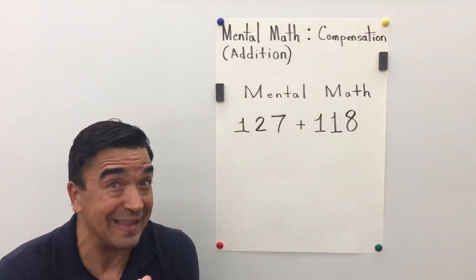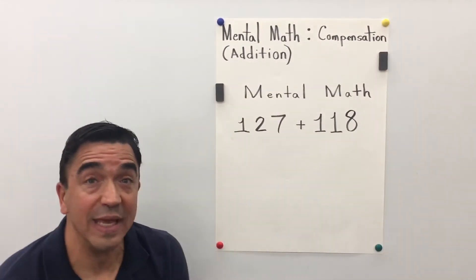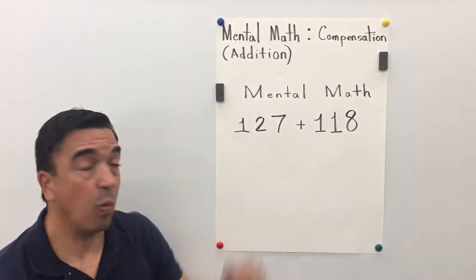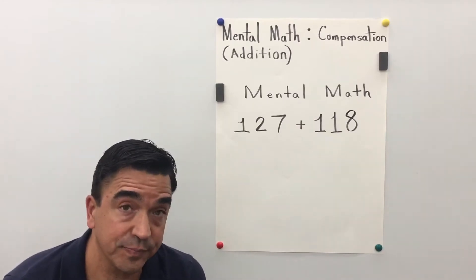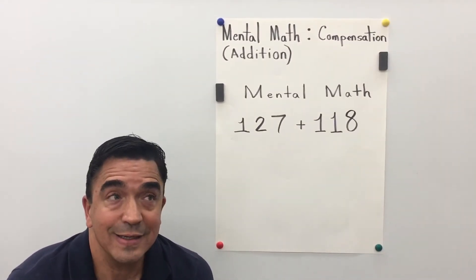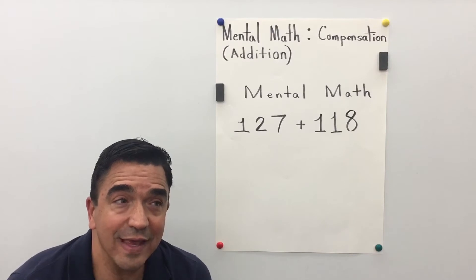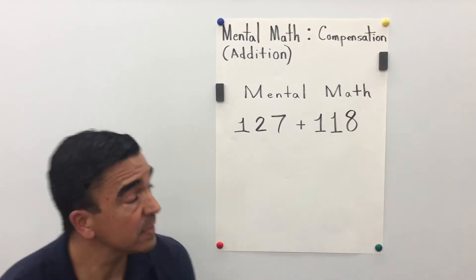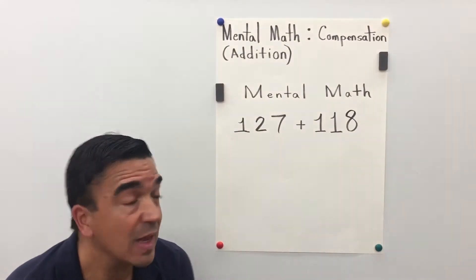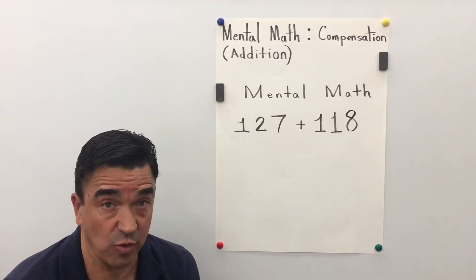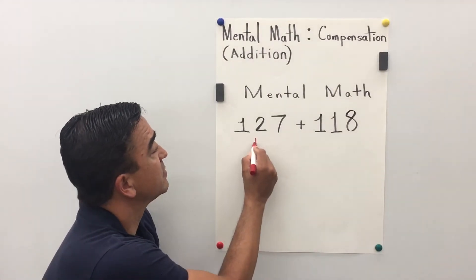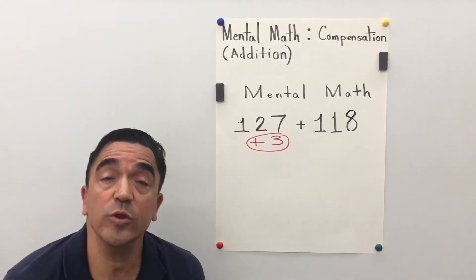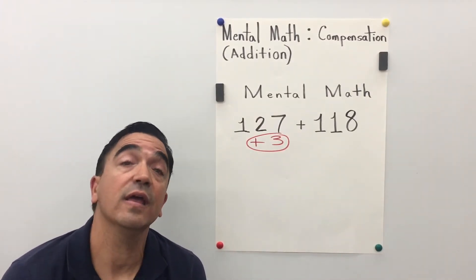Alright, here we go. The problem is 127 plus 118. As a mathematician, I know that it's easier to add groups of 10. So I'm going to add 3 to the 127, and 127 plus 3 is 130.